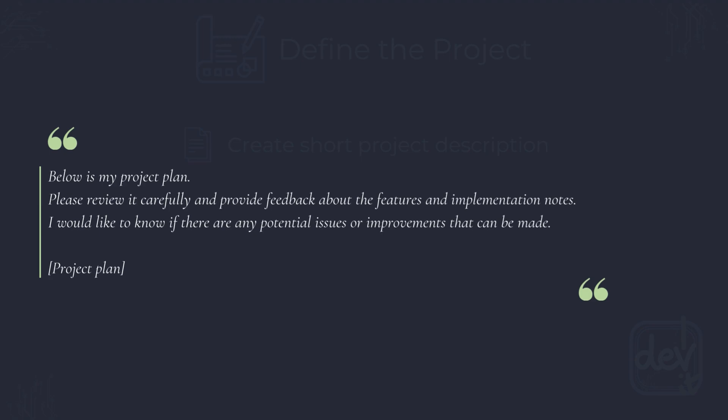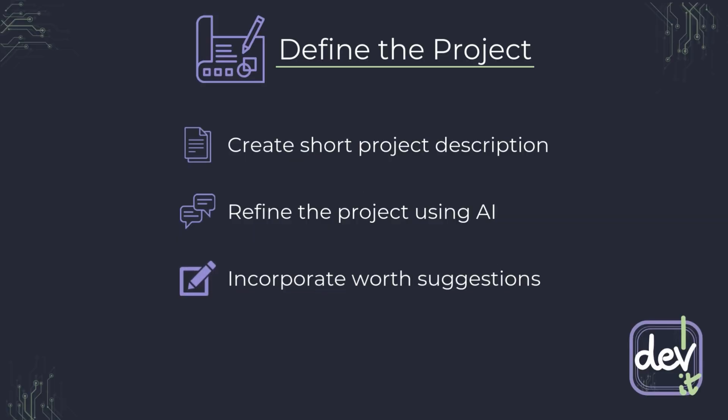I ask for potential issues and improvements. Claude analyzes it and gives actionable points on how to improve the plan. We need to review this feedback very carefully — this is the step where human control matters most. In some cases it might point out missing features, suggest better implementation strategies, or identify potential problems we haven't considered. Then we start iterating: incorporate suggestions worth considering into the plan and ask again, but clear the previous context to force the model to think fresh.